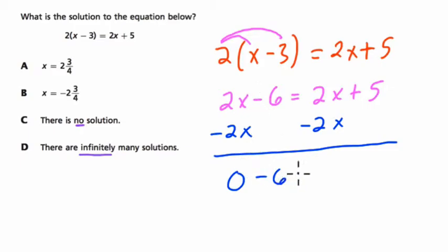On the right-hand side here we have 2x minus 2x, that's 0, and then plus 5. So what's 0 minus 6? That's minus 6. What's 0 plus 5? Well, that's just 5. And here we get a bizarre result. Negative 6 equals 5.